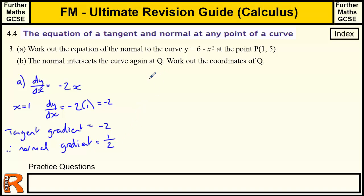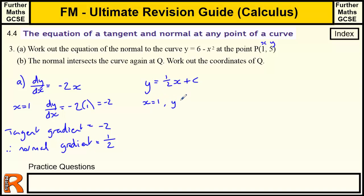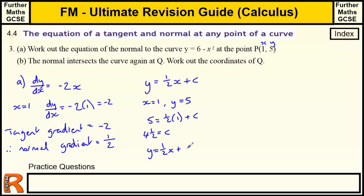That tells us that y is going to be equal to a half of x plus a constant. This time we're given x and y, so we don't have to work out the y — it saves a bit of time. When x equals 1, y equals 5. So 5 equals half of 1 plus a constant. Half of 1 is a half, so the constant equals 4 and a half. Therefore y equals a half of x plus 4 and a half.